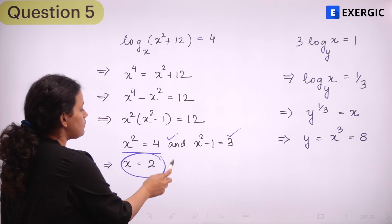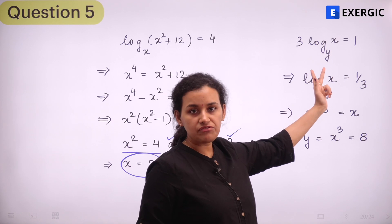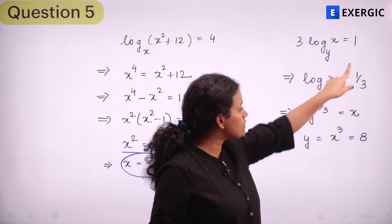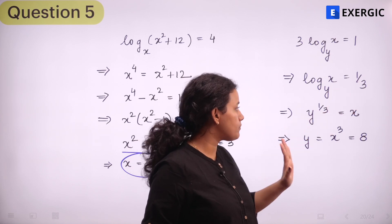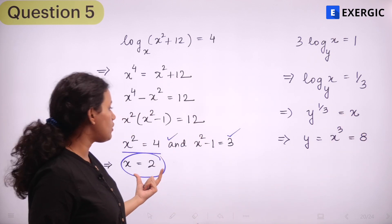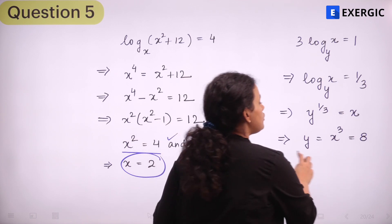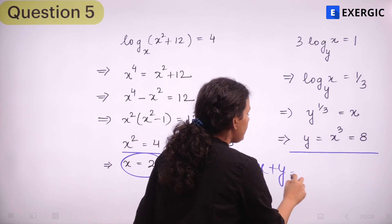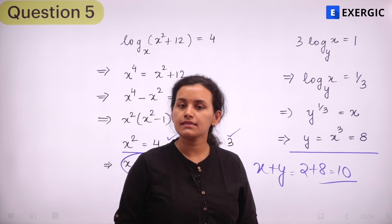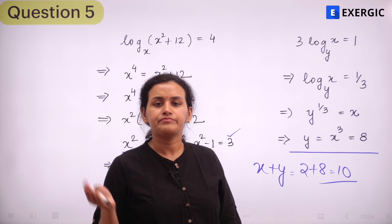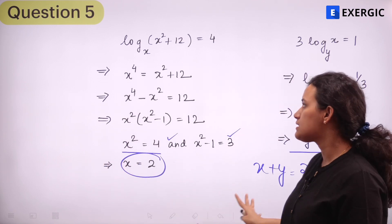From the second expression, 3·log base y of x = 1, so log base y of x = 1/3. This means y^(1/3) = x = 2, so y = 2³ = 8. Therefore, x + y = 2 + 8 = 10. This is an easy question testing the most basic rules of logarithms — specifically, what the logarithmic function means.